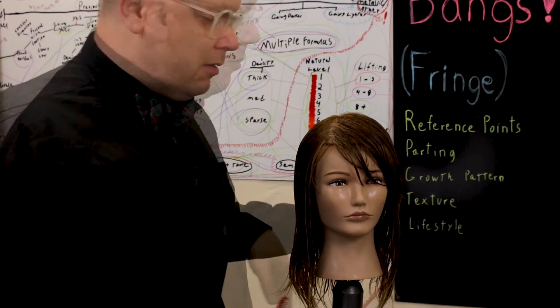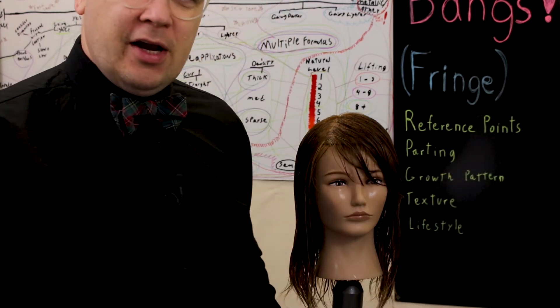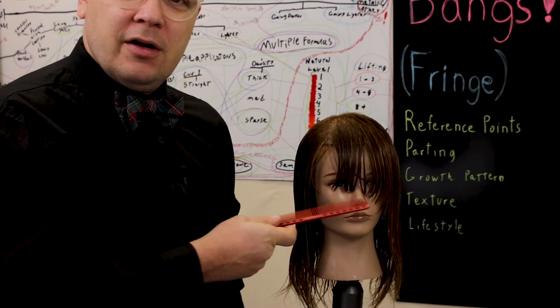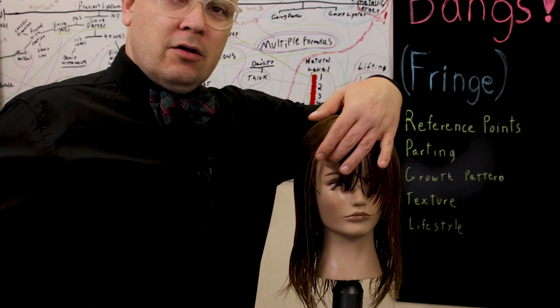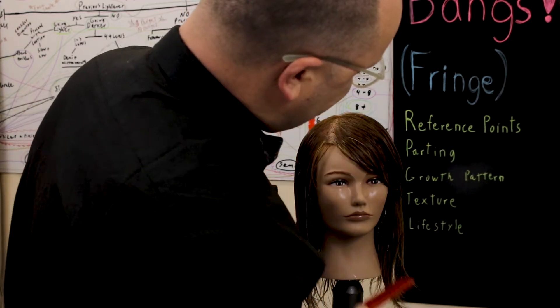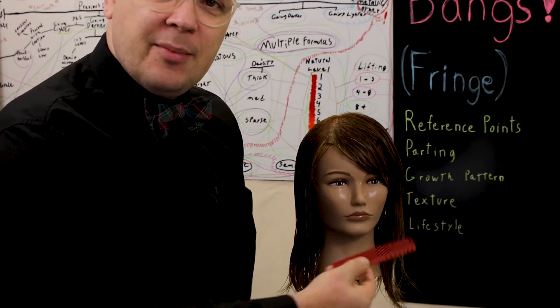So my guest has a side bang, but what if she wants to change her part to the other side? Because right now we are short to long going in the direction that she parts her hair. And though her hair is wet, you can see the general shape of the bang.